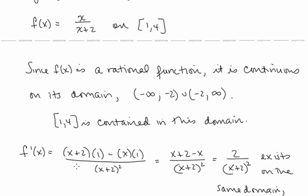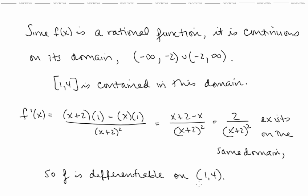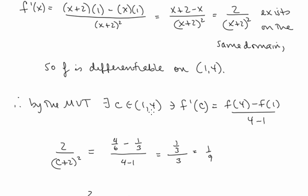Now let's take the derivative using the quotient rule. We get 2/(x+2)². As a rational function, this exists on its domain — which is the same domain as the original — so this derivative certainly exists on the open interval (1, 4), and f is differentiable on (1, 4). Therefore, by the Mean Value Theorem, there exists a c value in this open interval such that f'(c) equals [f(4) minus f(1)] over [4 minus 1].